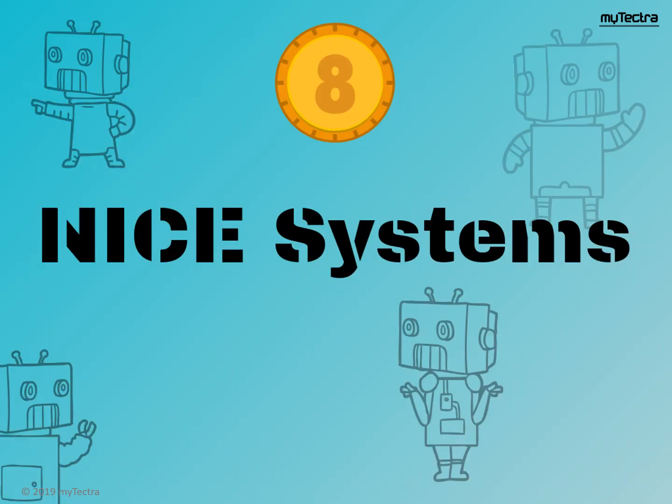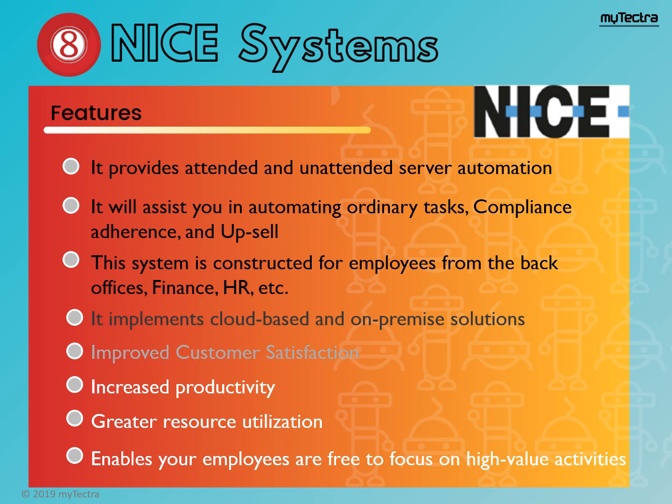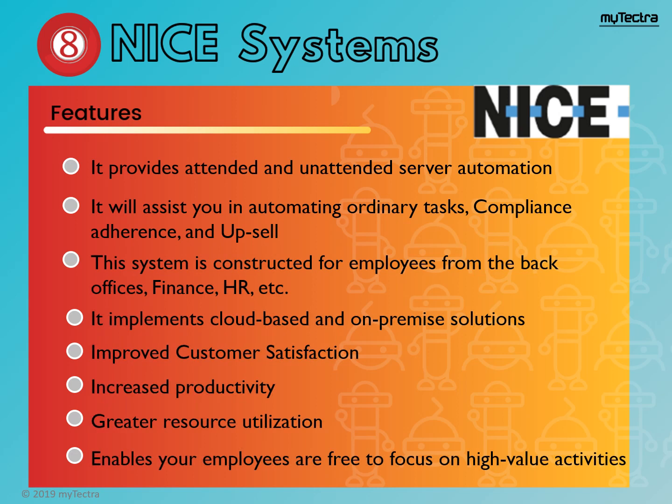Number 8 RPA tool is NICE Systems. NICE RPA tool is specified as Neva — NICE's Employee Virtual Attendant. It is an intelligent tool and encourages employees in repetitive tasks. NICE is a cloud and on-premise business software solution. NICE RPA tool supports any organization to take firm and accurate conclusions based on high-level analytics of structured and unstructured data. NICE features include: it provides attended and unattended server automation. It will assist you in automating ordinary tasks, compliance adherence, and upsell. This system is constructed for employees from back offices, finance, HR, etc. It implements cloud-based and on-premise solutions, improved customer satisfaction, increased productivity, greater resource utilization, and enables your employees to focus on high-value activities.